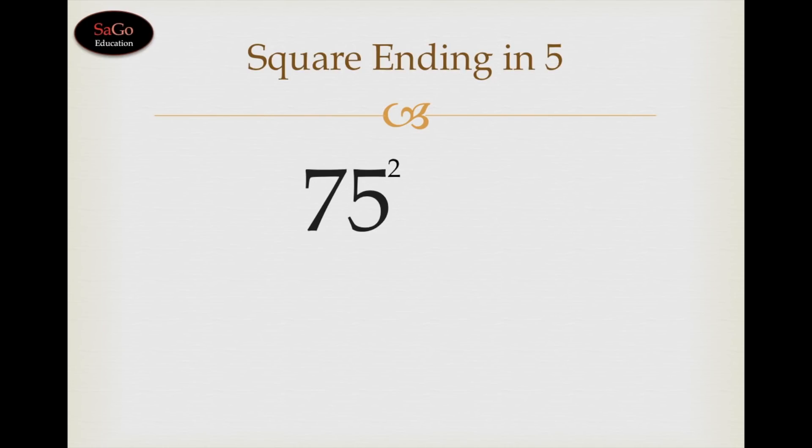75 square. What comes after 7 in counting? 8. Multiply 7 by 8 and it would be 56. Now we need to write the square of 5, which is 25. Answer is 5625.